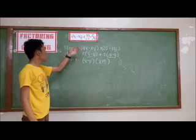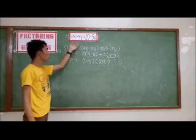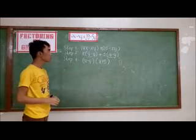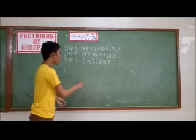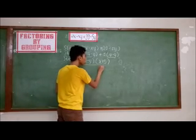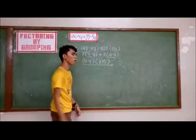Therefore, the factors of 4x minus xy plus 20 minus 5y are 4 minus y and x plus 5.